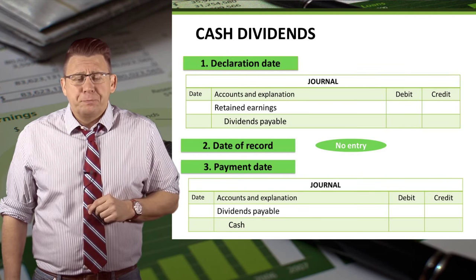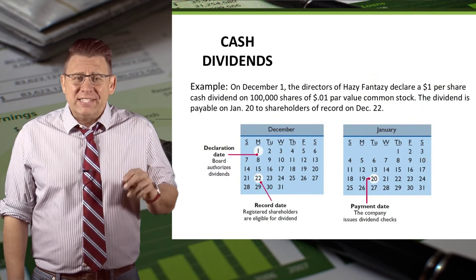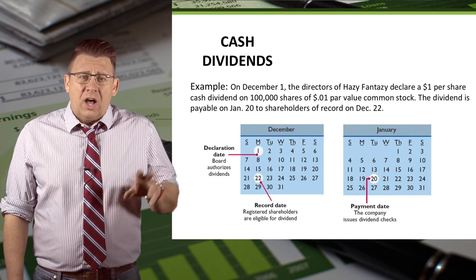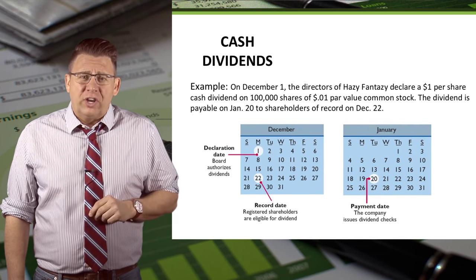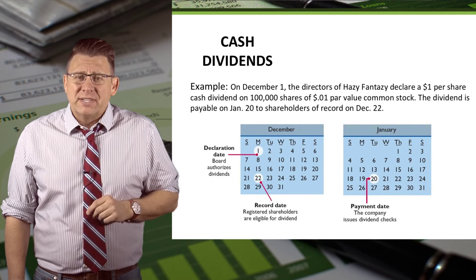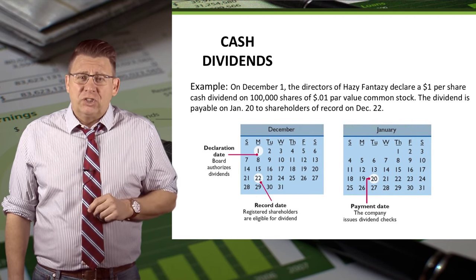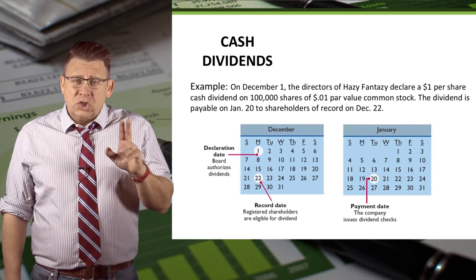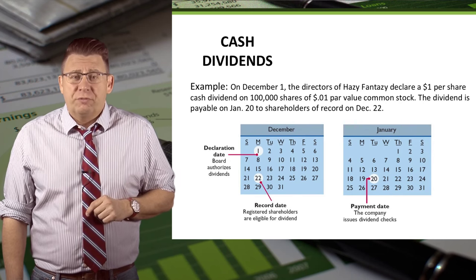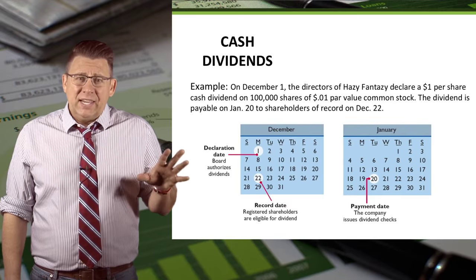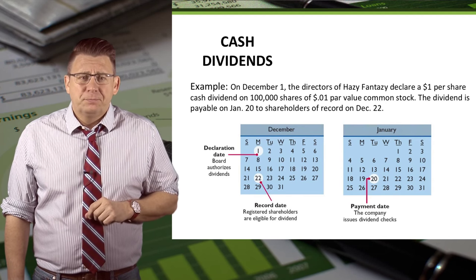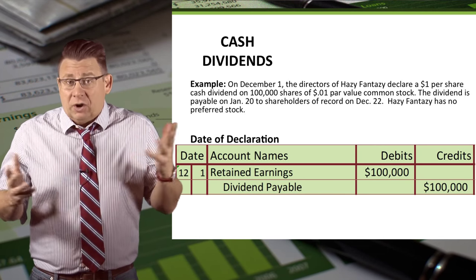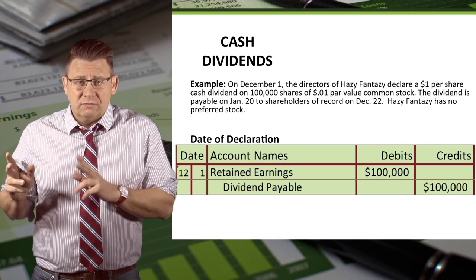Let's look at an example. On December 1, the directors of Hazy Fantasy Corporation declared a $1 per share cash dividend on 100,000 shares of one penny par value common stock. The dividends are payable on January 20th to the shareholders of record on December 22nd. Assume Hazy Fantasy has no preferred stock. The total amount of dividend is $100,000, calculated by taking 100,000 shares times $1.